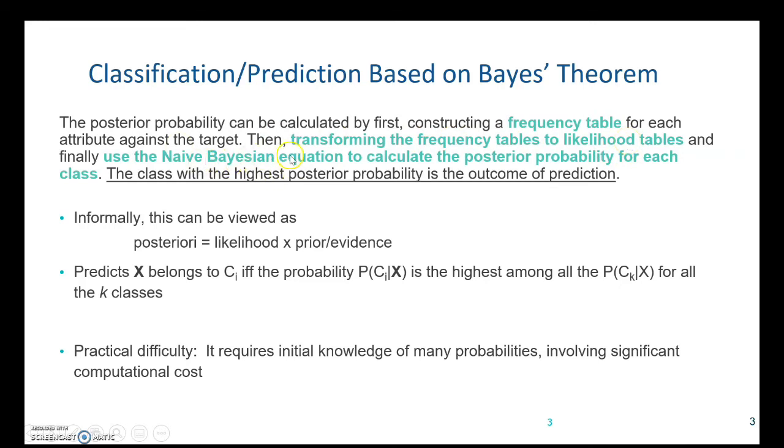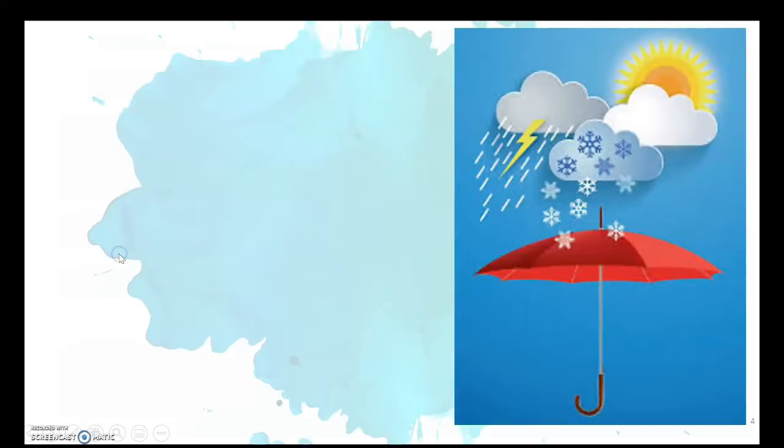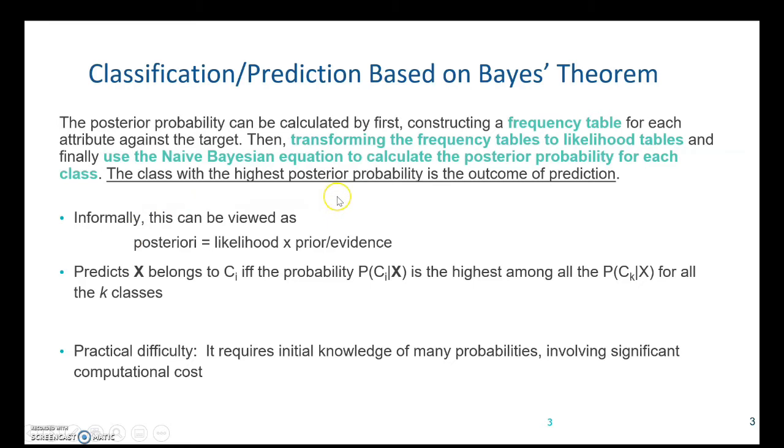And finally, the Naive Bayes equation is used to calculate the posterior probability for each class. And the class with the highest posterior probability is the outcome of the prediction.